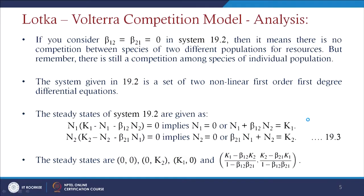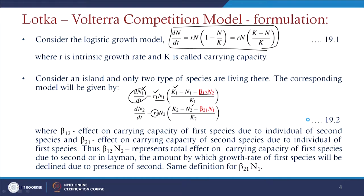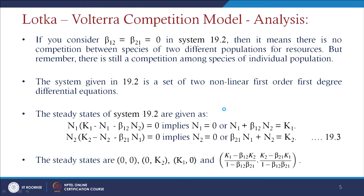The system of equations represents two non-linear first-order differential equations. For steady states we set: n1(K1 − n1 − β12·n2) = 0 and n2(K2 − n2 − β21·n1)/K2 = 0. This gives n1 = 0 or n1 + β12·n2 = K1, and n2 = 0 or β21·n1 + n2 = K2.